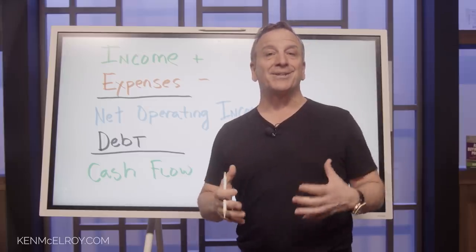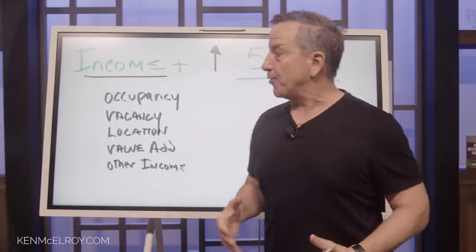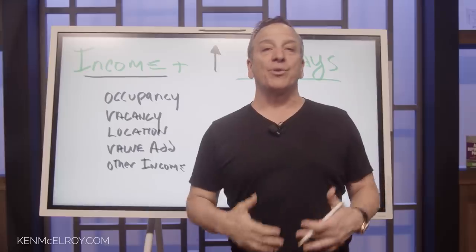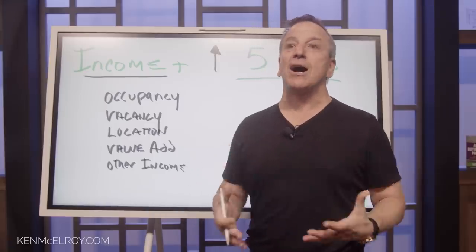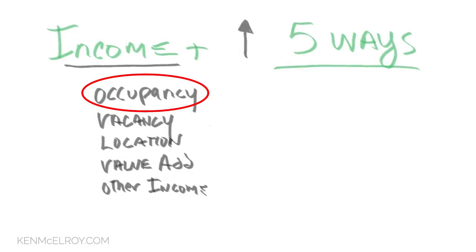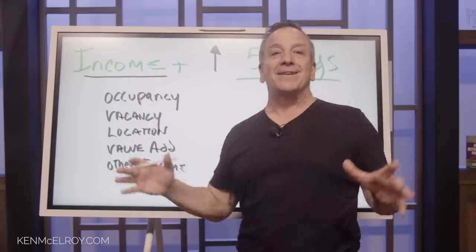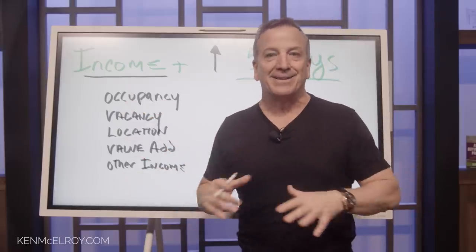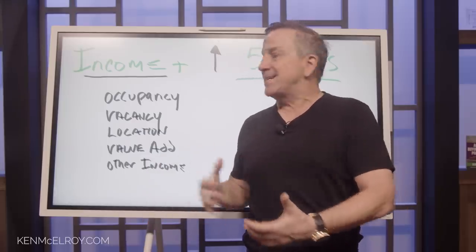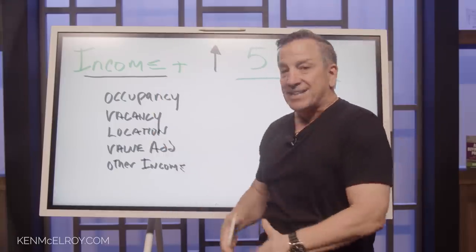I'm going to show you some tricks from our own management company. When we're looking for a property, we're always looking for five ways to grow the income. The first and most obvious is occupancy. You'd be surprised how often management companies or owners are horrible at this — they don't return emails, don't answer the phone, and they're not open. So they'll have vacancies sitting all the time, which drives down income.